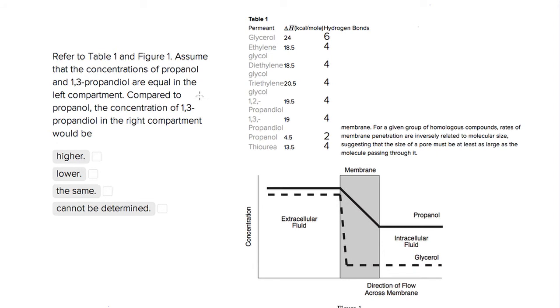This is Sophie Heller, and this is an ACT science question. The question asks us to look at Table 1 and Figure 1 and assume that the concentrations of propanol, so one of our substances we're looking at...